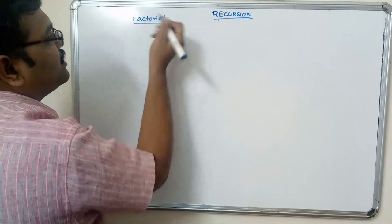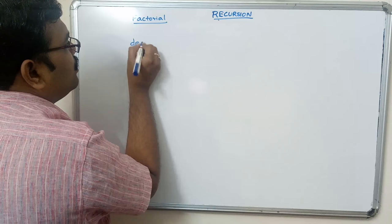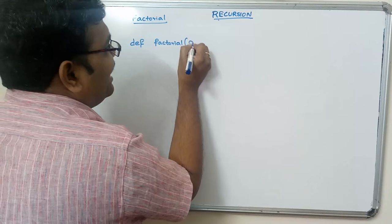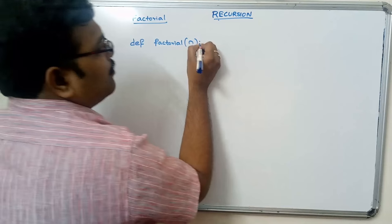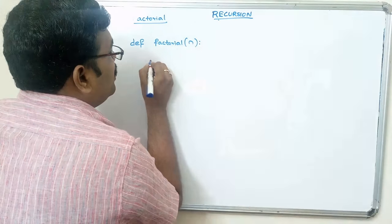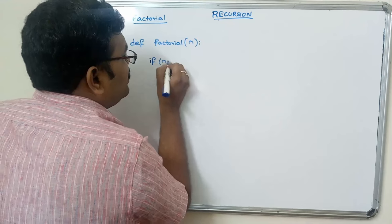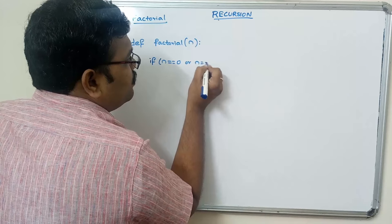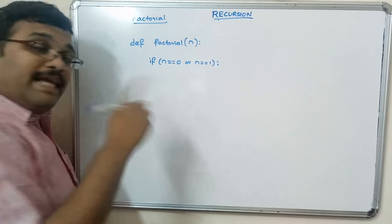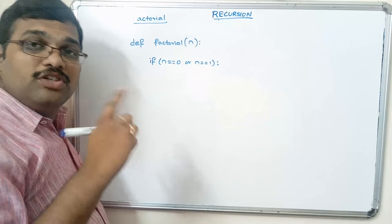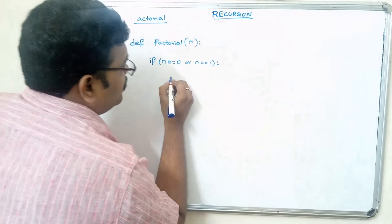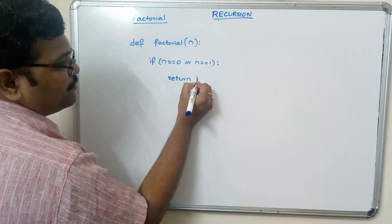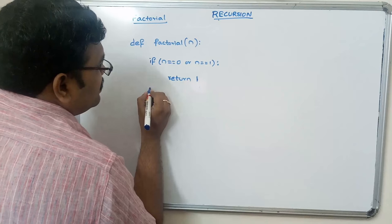Factorial using recursion. We define: def factorial(n). Here n is passed. If n == 0 or n == 1, in both cases the answer is one because 0 factorial is 1 and 1 factorial is 1. So we return 1.